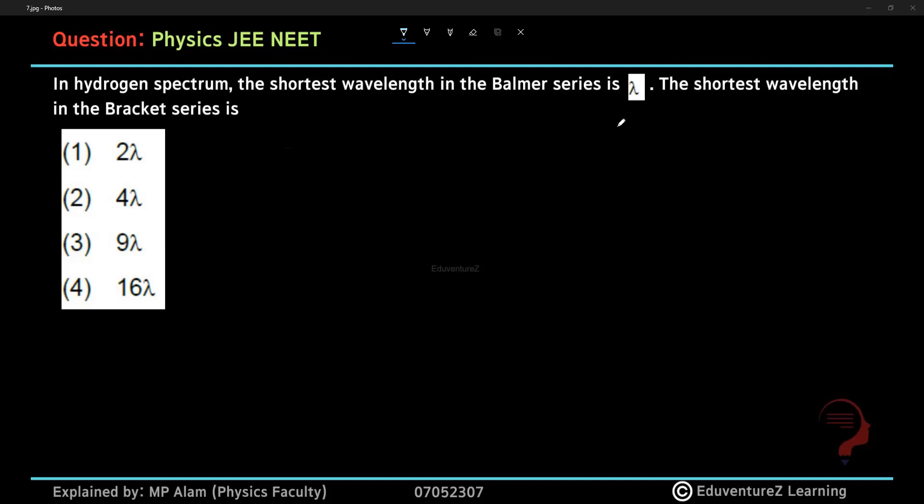If there is an electron transition to which orbit? From infinite, suppose, to the second.